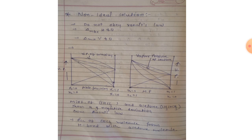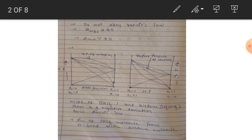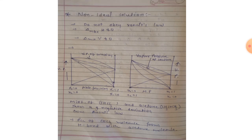I have drawn a diagram showing vapor pressure according to Raoult's law — vapor pressure against mole fraction. The curve above the Raoult's law line represents positive deviation, where vapor pressure of the solution is higher, and the curve below represents negative deviation, where vapor pressure of the solution is lower. This diagram shows the relationship between vapor pressure and mole fraction for non-ideal solutions.